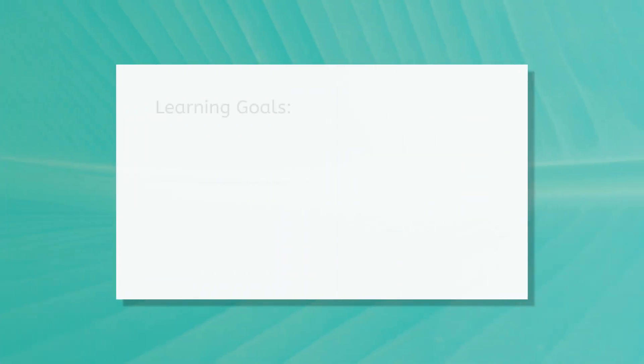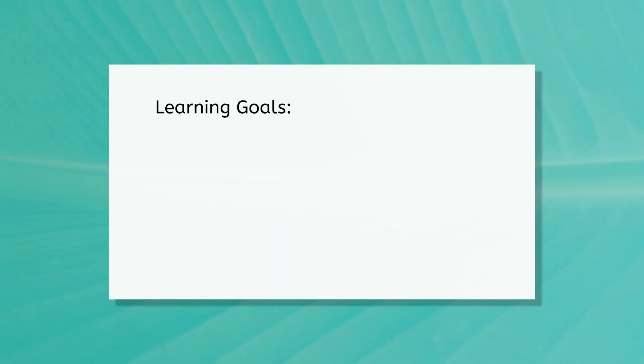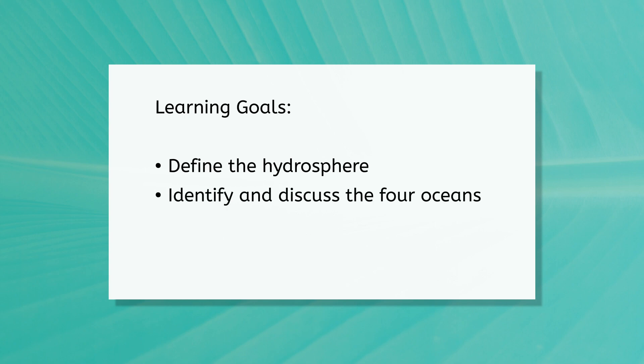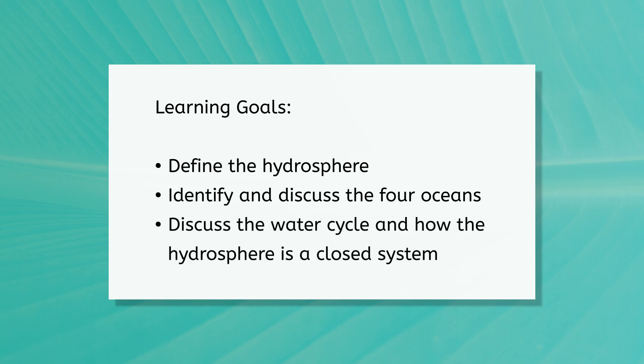In this lesson, we are going to be introduced to the hydrosphere, or the areas of Earth that are made of water. But before we get started, let's look at our goals for this lesson. By the end, you'll be able to define the hydrosphere, identify and discuss the four oceans, discuss the water cycle, and how the hydrosphere is a closed system.